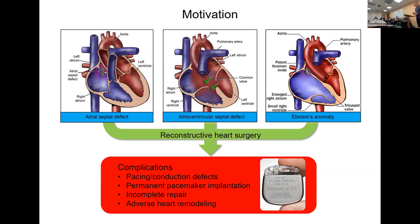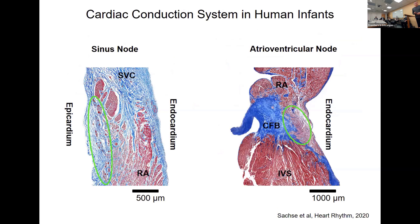Incomplete repairs that result from excessive caution following standard protocols can lead to adverse cardiac remodeling. That's a population of heart failure patients who show up decades later without simple treatment options and are candidates for transplantation. Here we see images produced by us on two components of the cardiac conduction system that we focused on initially: the sinus node and the AV node.